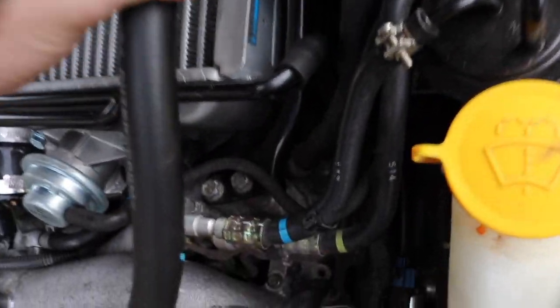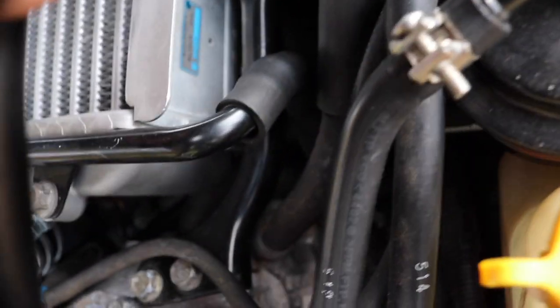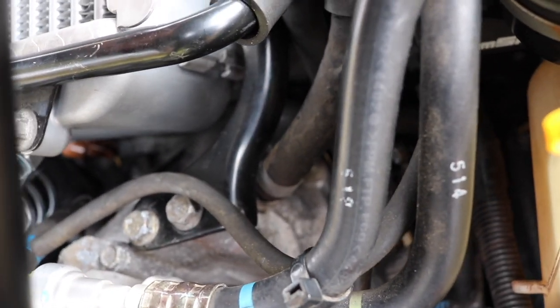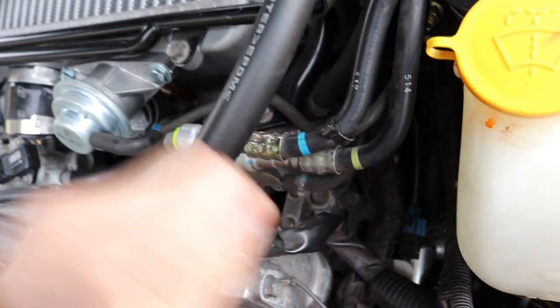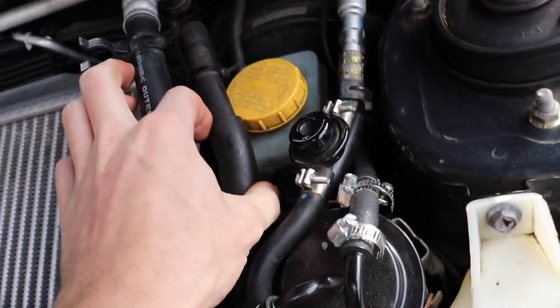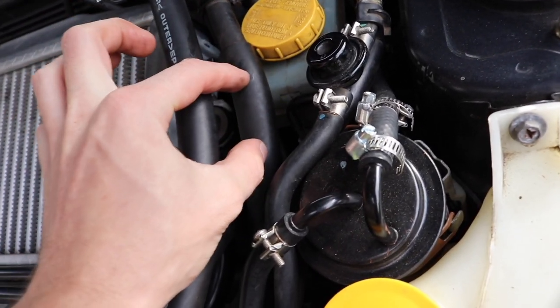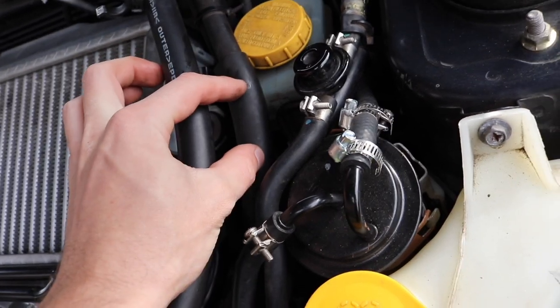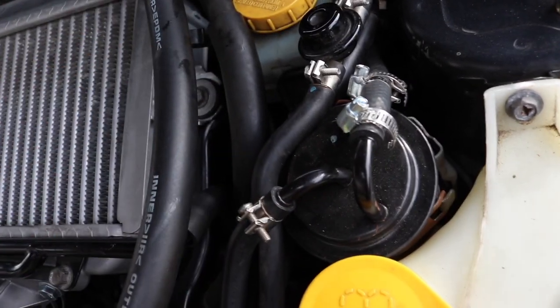It comes around and hooks in over here. Got this AC line in the way but that's the hose we're looking for. The only thing keeping this in place is two hose clamps, one on this side and one on the other side. They're the easy ones that you just unclamp with some pliers.